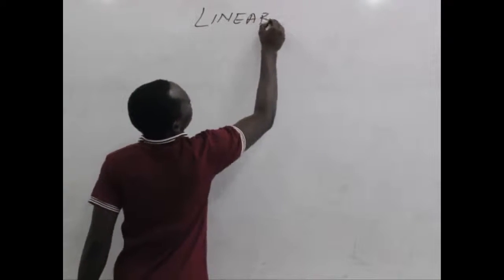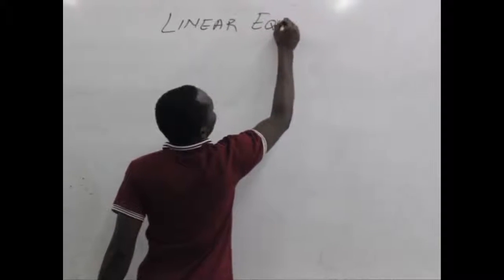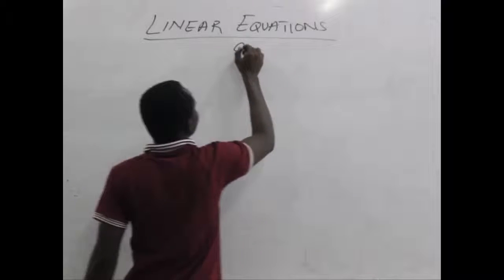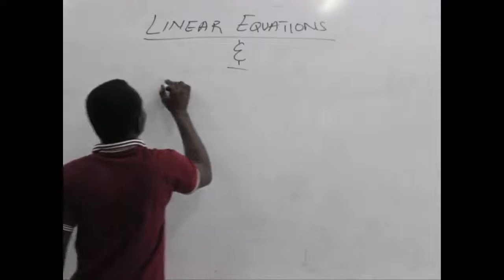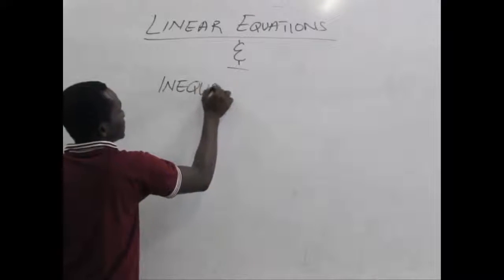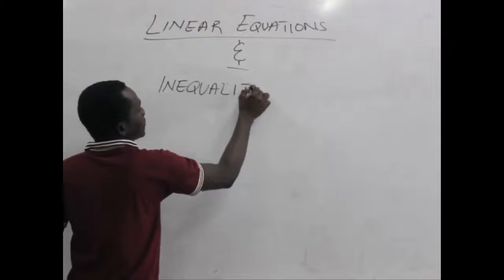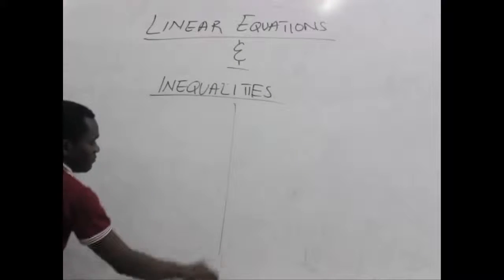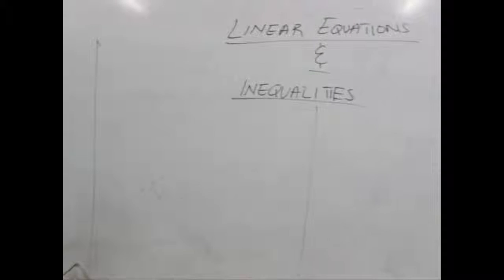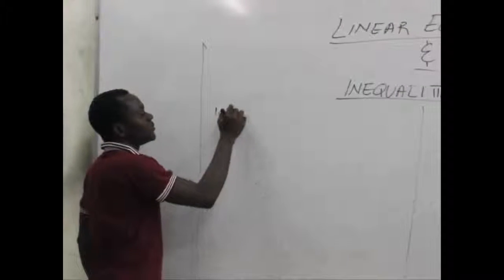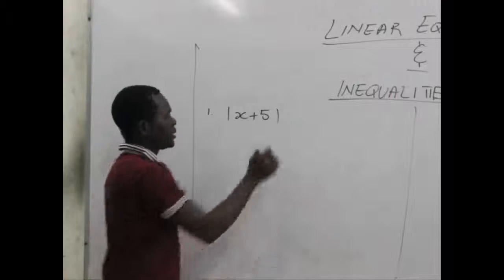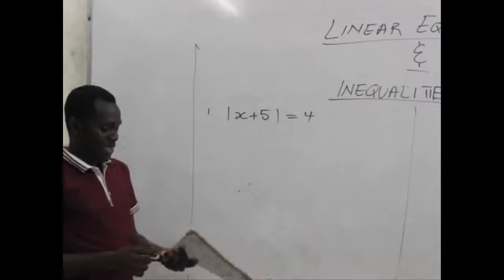So, Linear Equations and Inequalities. We will start by taking equations with absolute functions in them. For example, having this equation: the absolute value of x plus 5, which is equal to 4. How do we work such an equation?